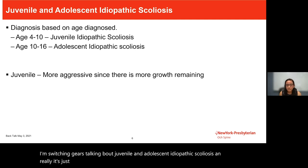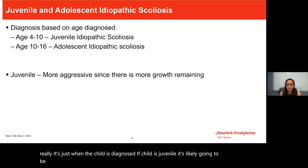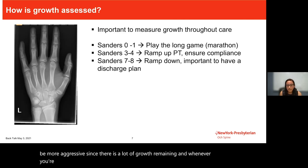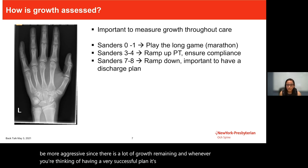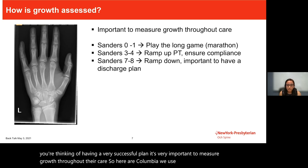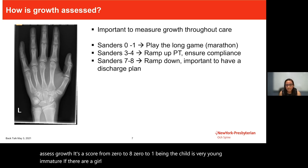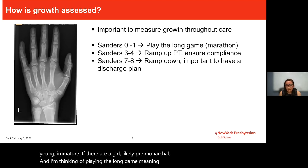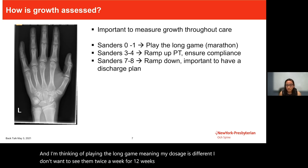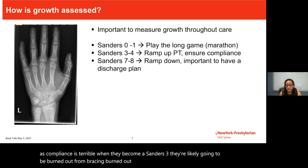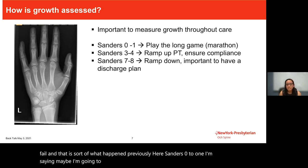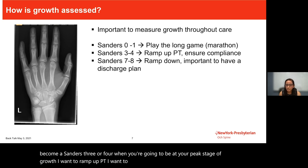For juvenile and adolescent idiopathic scoliosis, it matters when the child is diagnosed — juvenile diagnosis likely means more aggressive treatment since there's a lot of growth remaining. At Columbia we use Sanders Score, from zero to eight, to assess growth. At Sanders zero to one, the child is very young and likely pre-menarchal, so I plan for the long game — seeing them maybe once a month — because if we treat intensively too early, by Sanders three to four at peak growth, they'll likely be burnt out from bracing and exercise. At Sanders seven to eight, it's important to have a discharge plan so that as adults they're confident and successful.